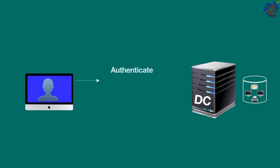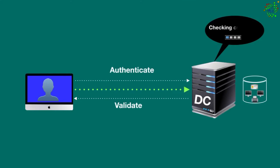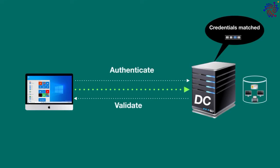This is how it works: when a user tries to access a domain, the request goes to the domain controller, which pulls information from the database and checks the username and password to either allow or deny access. If the credentials match, the user gets access; otherwise, the request is declined.